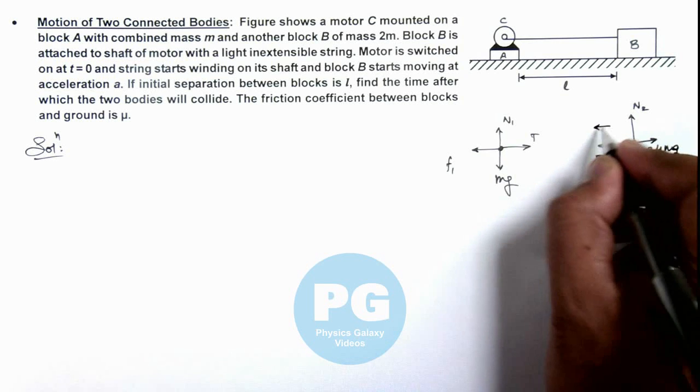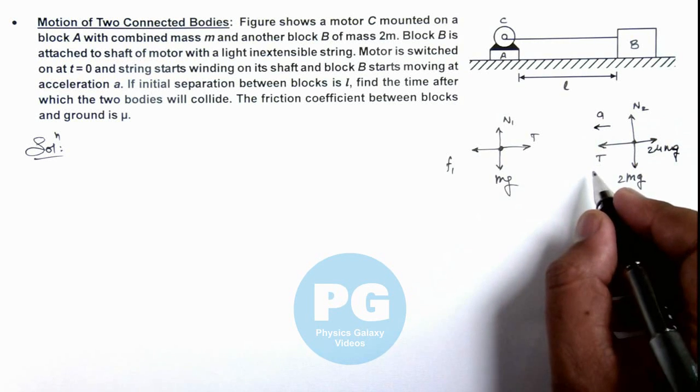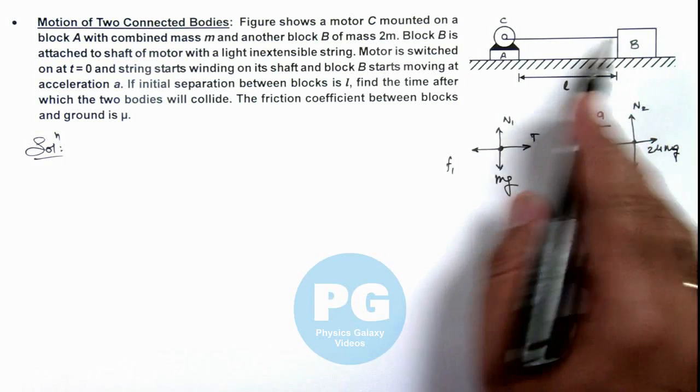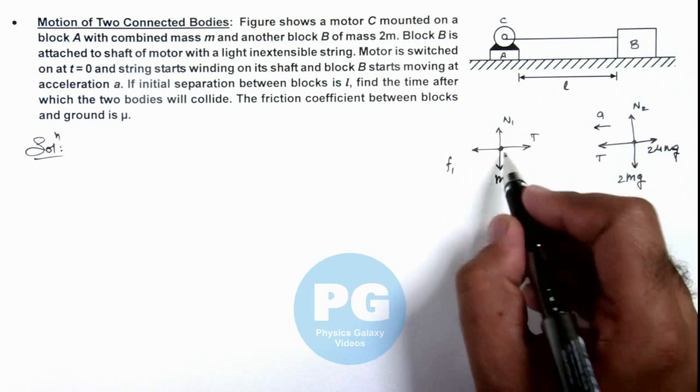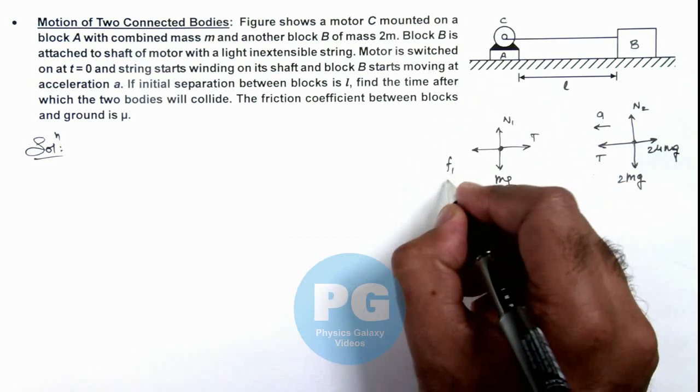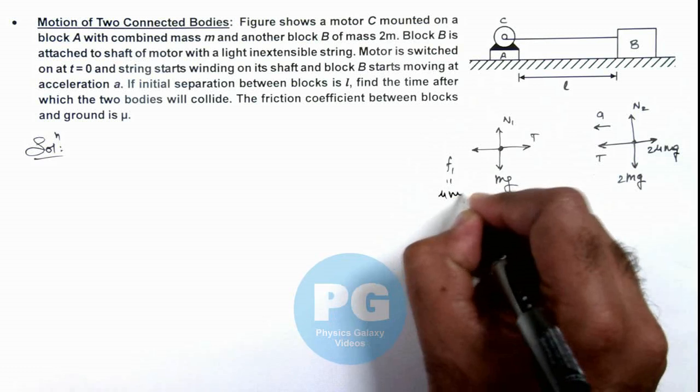Because we are given that it is accelerating with acceleration a, so if block B due to tension will slide, that means block A which is lighter than this will certainly slide and the value of friction here will be μmg.